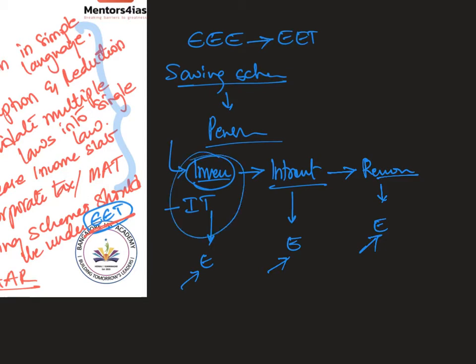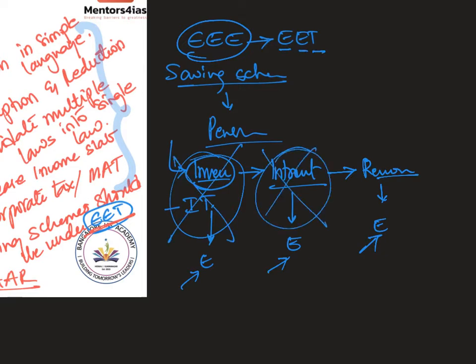The government has various savings schemes to promote individuals to invest in their future. However, the government is losing a lot of money because of the EEE system. So the government wants to replace it with EET — exempt, exempt, tax. That means when you invest, you don't pay tax. When you earn interest, you don't pay tax. But when you withdraw the money, that is when you have to pay tax.